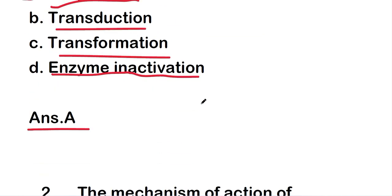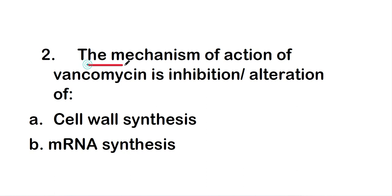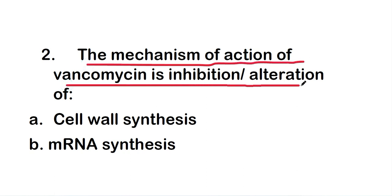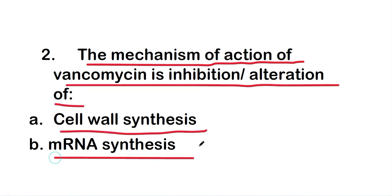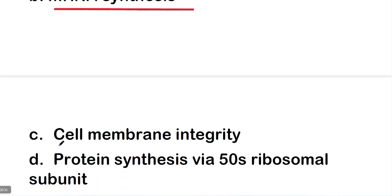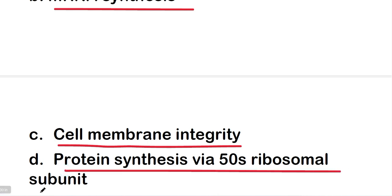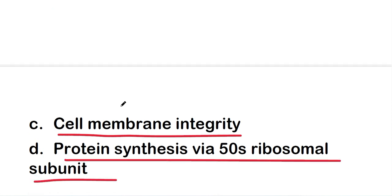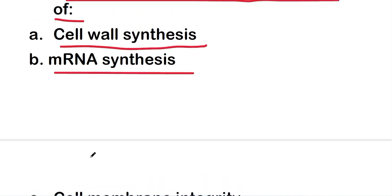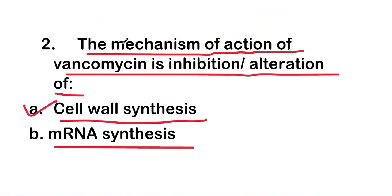The next question: the mechanism of action of vancomycin is inhibition or alteration of cell wall synthesis, mRNA synthesis, cell membrane integrity, or protein synthesis via 50S ribosomal subunit. The right answer is option A — cell wall synthesis. So the mechanism of action of vancomycin is inhibition or alteration of cell wall synthesis.